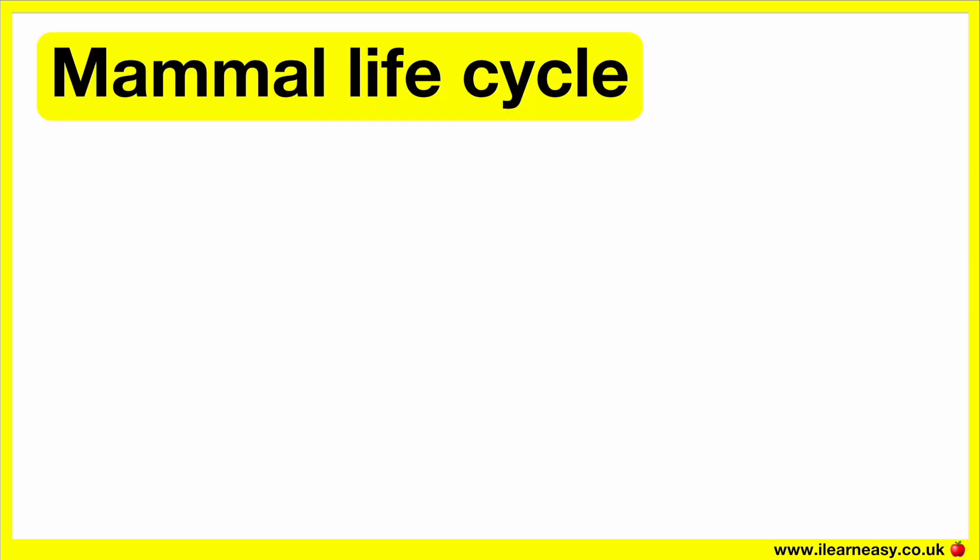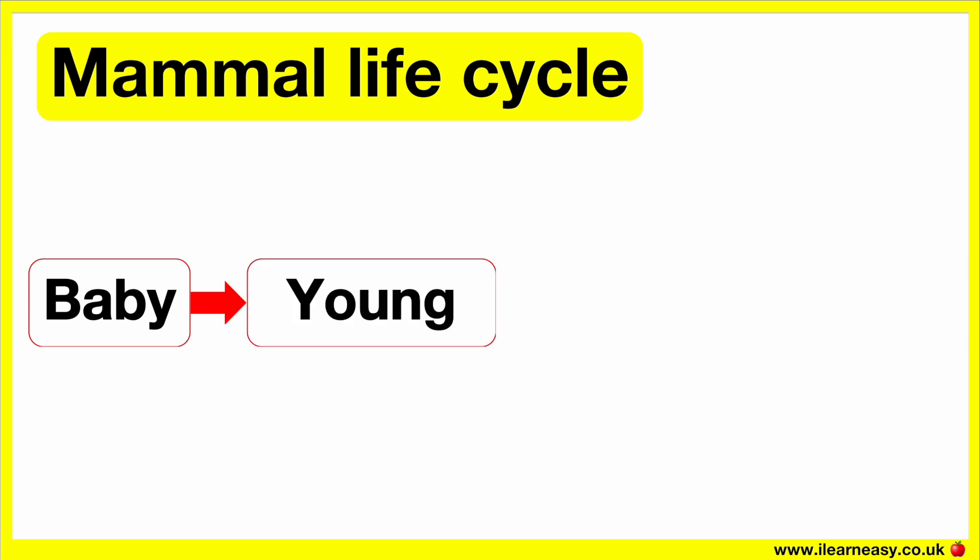A mammal life cycle consists of three stages: baby, young, adult.